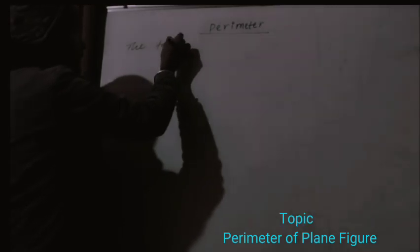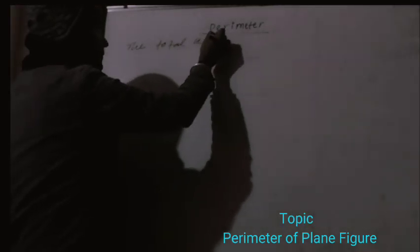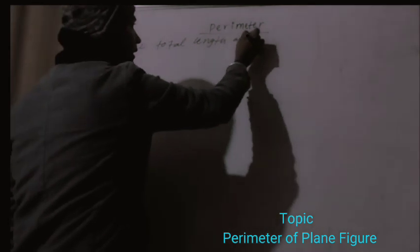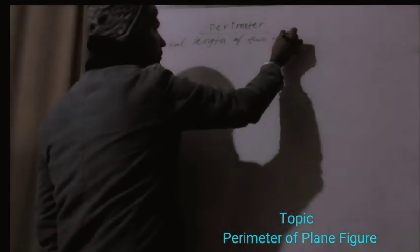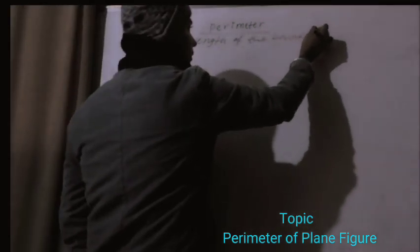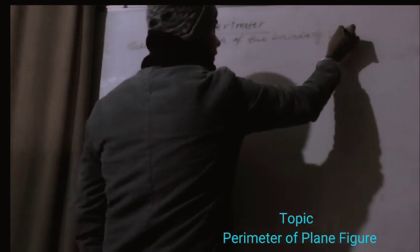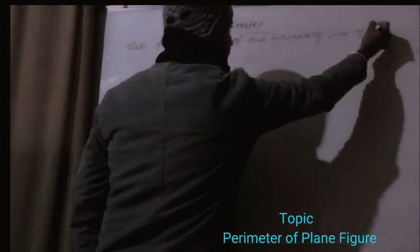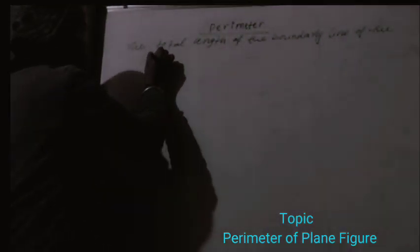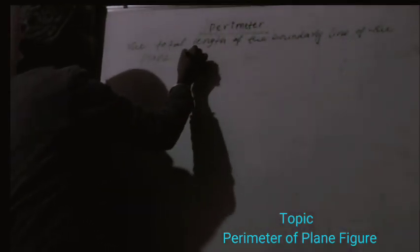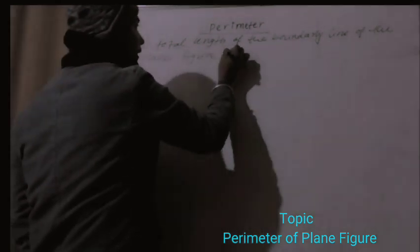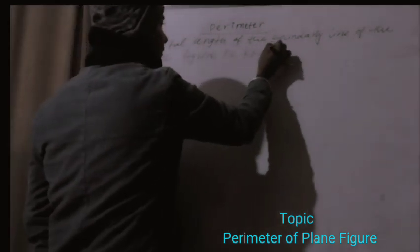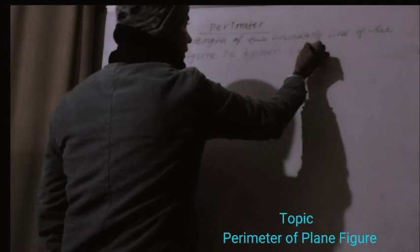The total length of the boundary line of the plane figure is known as perimeter.